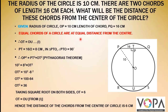Since equal chords of a circle are at equal distances from the center, OT will be equal to OU. PT will be half of PQ, because perpendiculars drawn from the center to a chord bisect the chord. So if PQ is 16, then PT will be half of 16, which equals 8 centimeters.